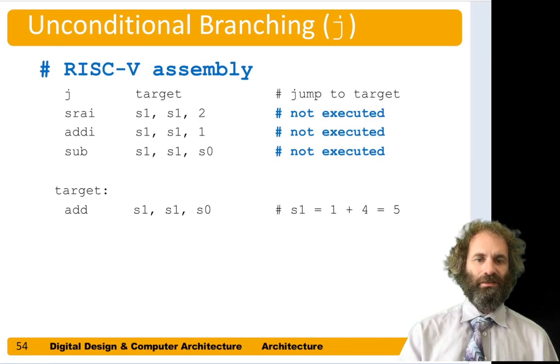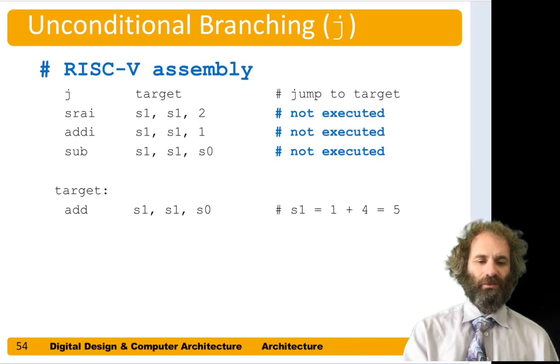Here's an example of an unconditional jump. So if we have an instruction jump to target, that then goes straight down to here to target and skips over these instructions in between.